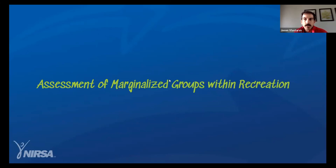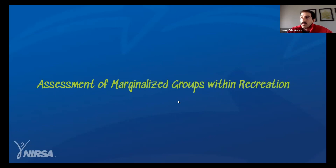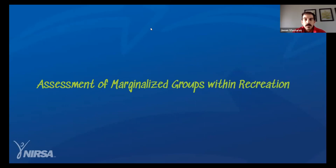Aaron emphasized the importance of disaggregating data — rather than reporting overall diversity numbers, breaking them down to identify which underrepresented populations are and aren't participating. He shared a practical example from their outdoor program: after disaggregating data, they reached out directly to specific student groups, working with the international students office and black graduate student group to create custom trips. He described this as going directly to those groups after seeing the data and being intentional about outreach rather than waiting for them to show up.